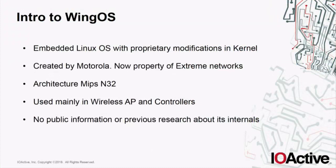So what the hell is WiNG OS? Basically it's an embedded Linux operating system with its own proprietary stuff in the kernel — like their own proprietary drivers, their own proprietary socket address family and stuff like that. Originally it was created by Motorola, but now it's property of Extreme Networks. The architecture is MIPS N32, at least for the devices I've been working with, and mainly it's used for wireless access points and wireless controllers.